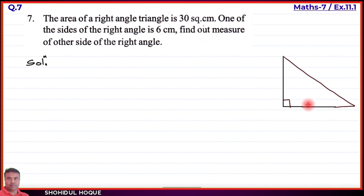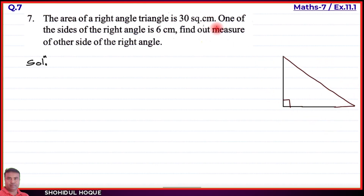One of the sides forms the height of the right angle triangle. The area of the right angle triangle is given as 30 square centimeters.